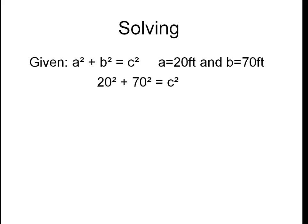20 squared plus 70 squared equals C squared. 400 plus 4900 equals C squared. 5300 equals C squared.